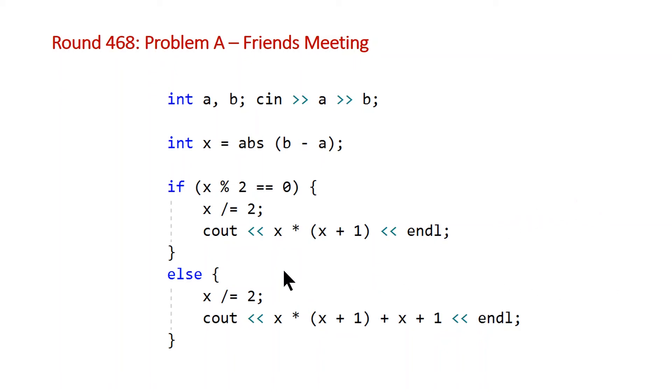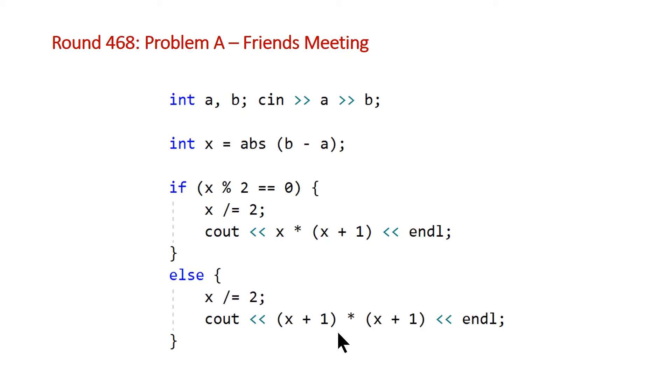But for the case where x is odd, we're using the same formula, but because we have that one number that we need to add, we're basically just adding that. So it's n times n plus 1 plus n plus 1. So you can note here that we can actually just fold this into our equation here. So x times x plus 1 plus x plus 1 is also equal to x plus 1 times x plus 1. And now looking at this, we can see that the only difference between this formula and this formula is a plus 1.